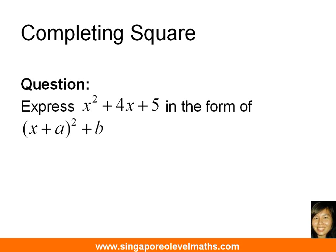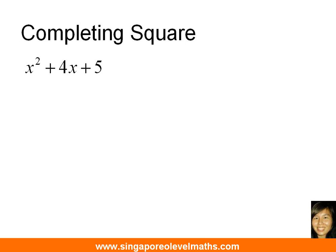So what you have in front of you is a typical quadratic equation, and the form they want you to express it in is what we call the completed square form. The first step is to ensure that the coefficient of x² is 1. In this case, check — step 1 is true.